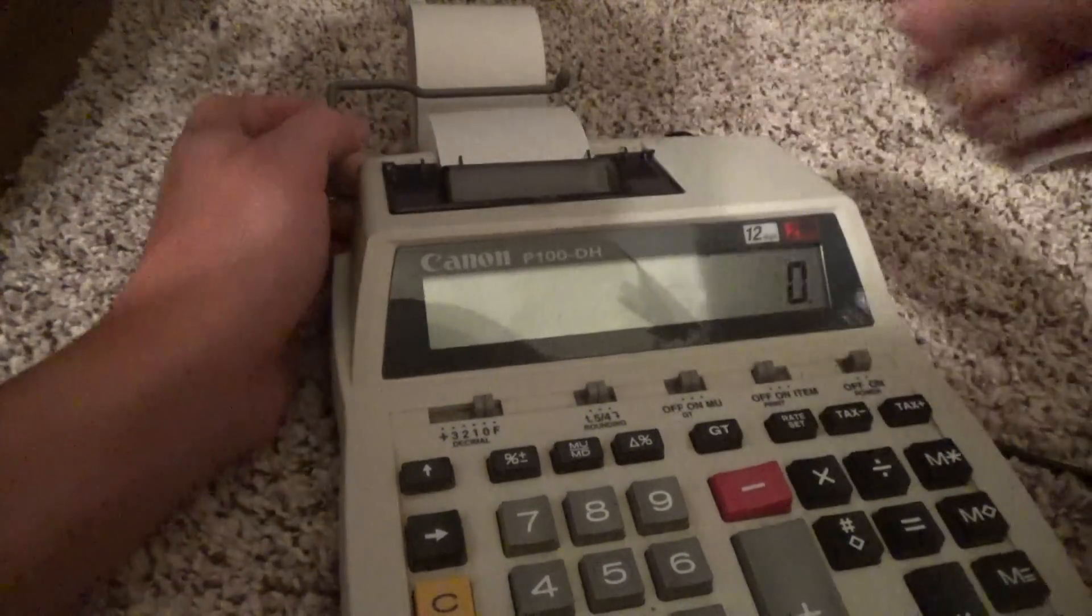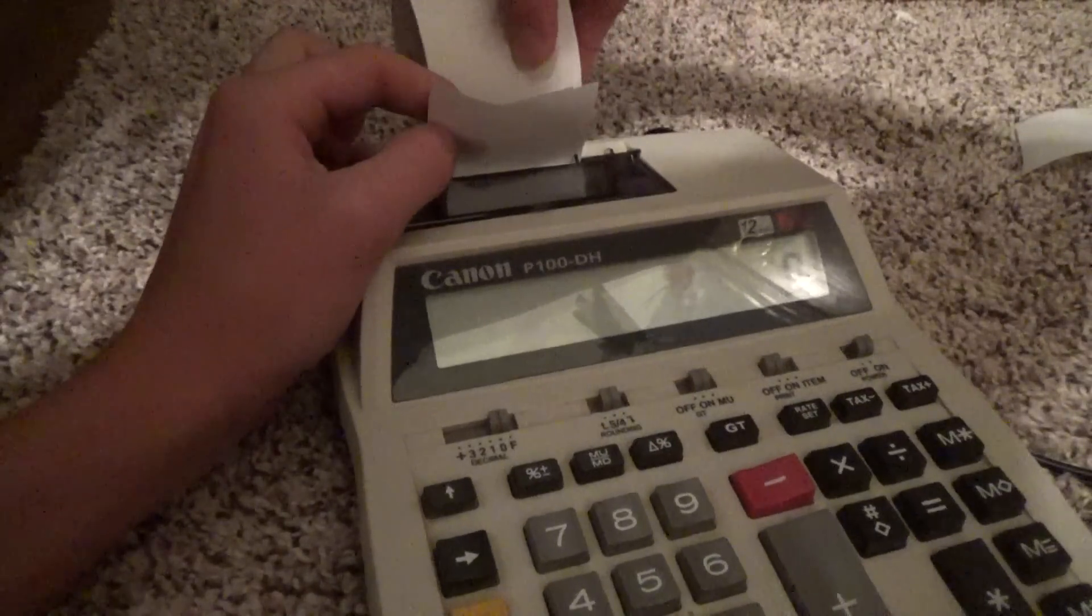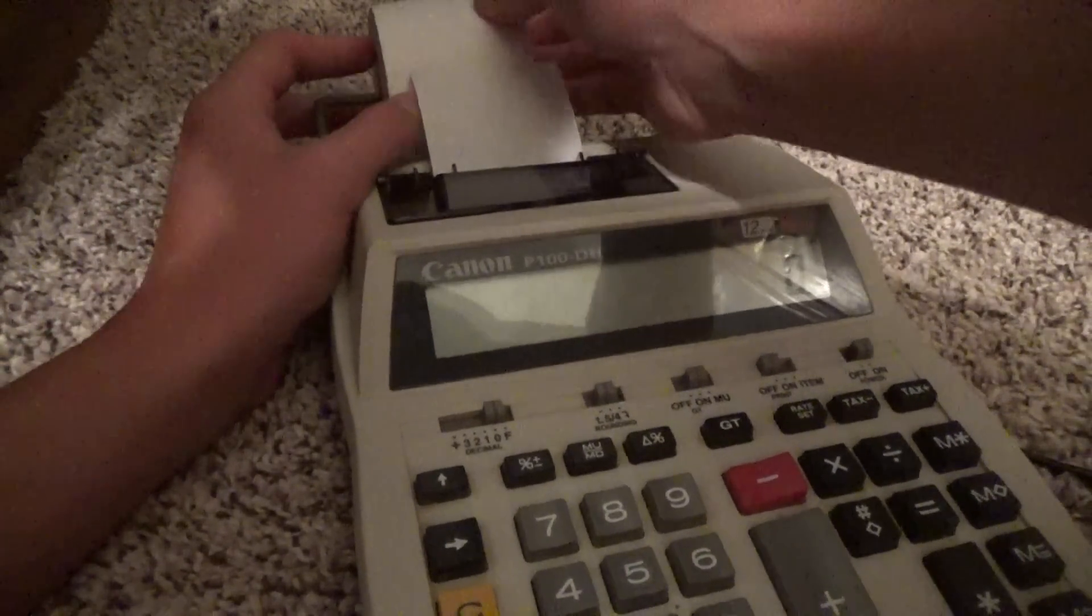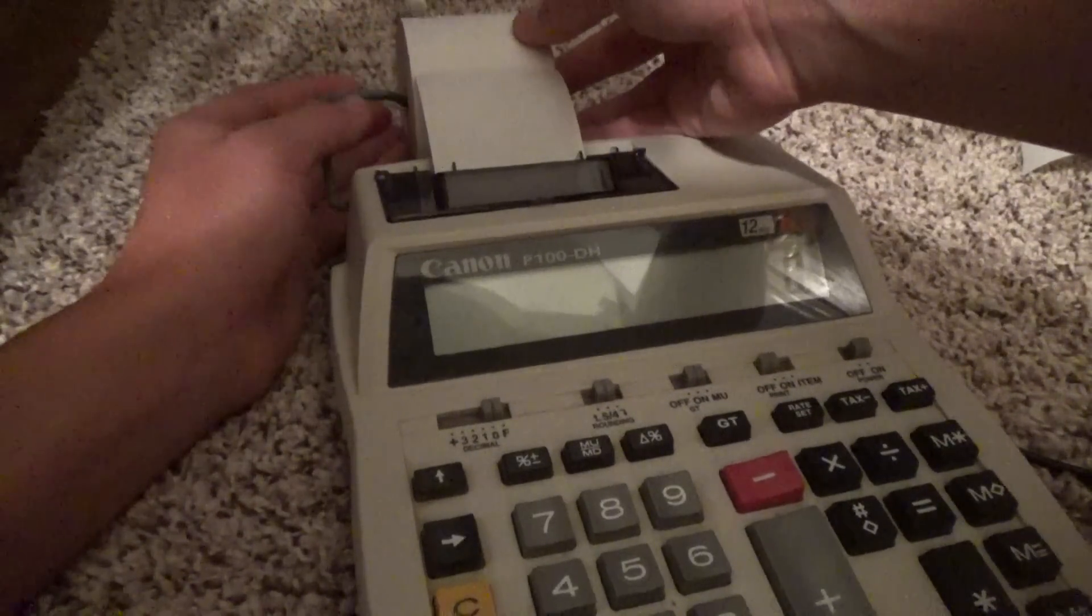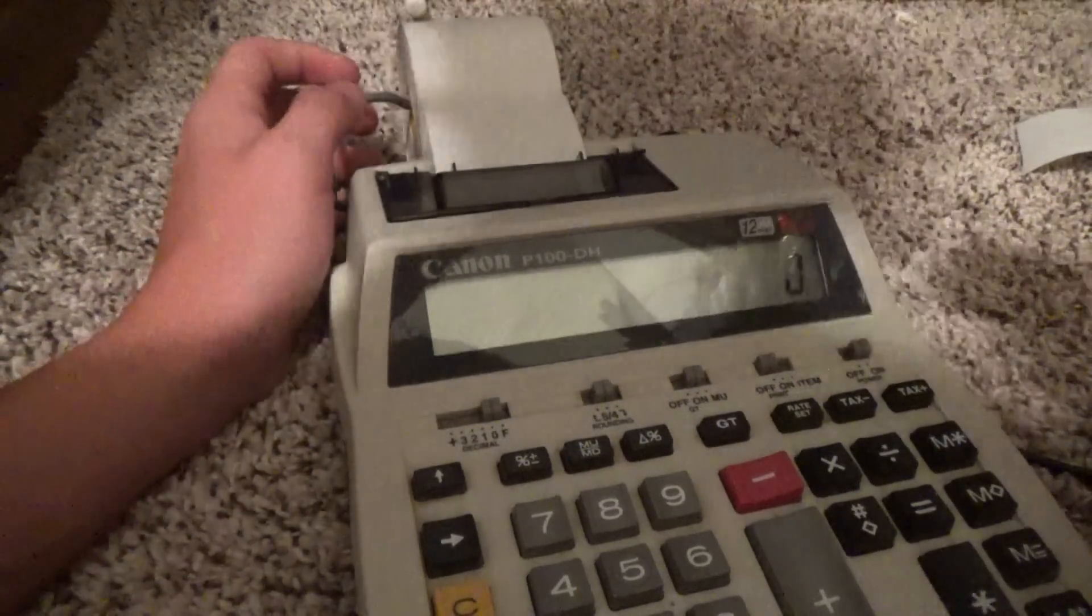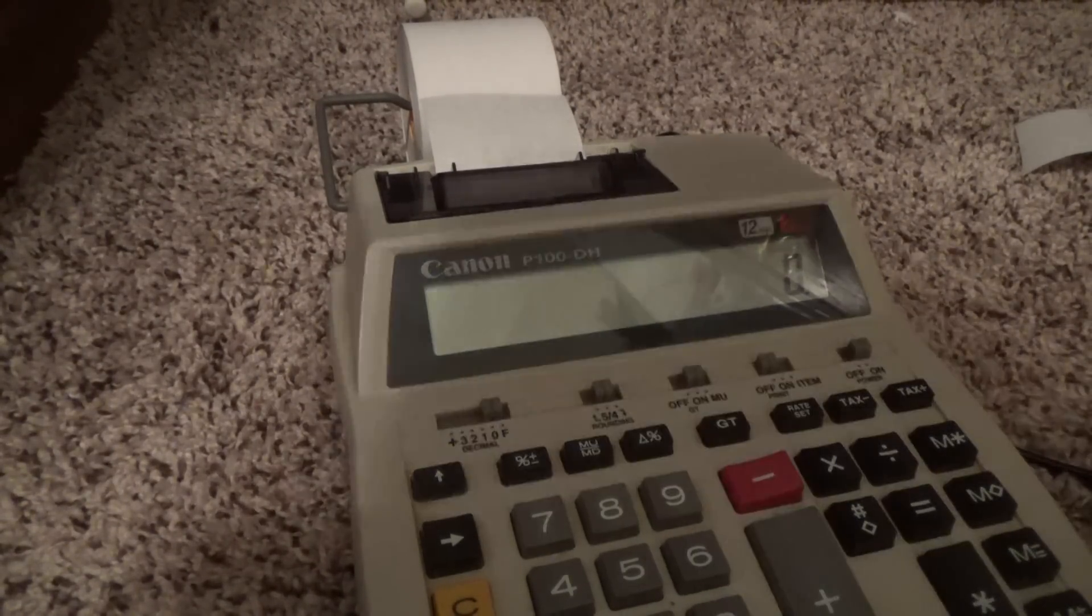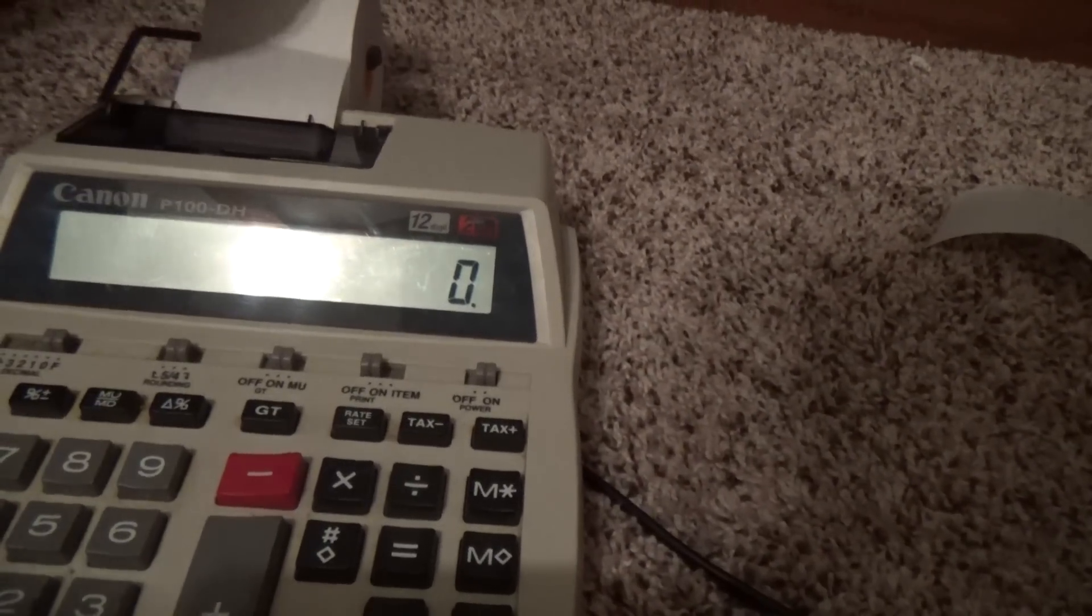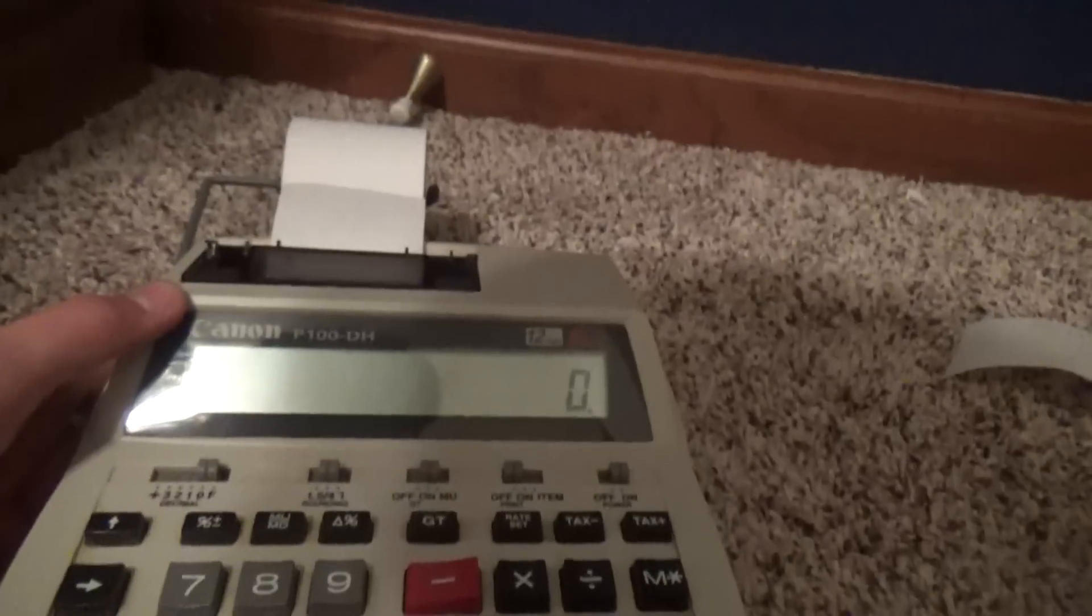And that is how you put the paper on this Canon Printing Calculator. Oh, I folded the paper there a little bit. Whoops. That's not too much of an issue. And there we have it. Try not to pull backwards on it. On a side note guys, if you didn't already know this, never pull the paper out like this or pull it backwards out of the machine. It could damage it severely.